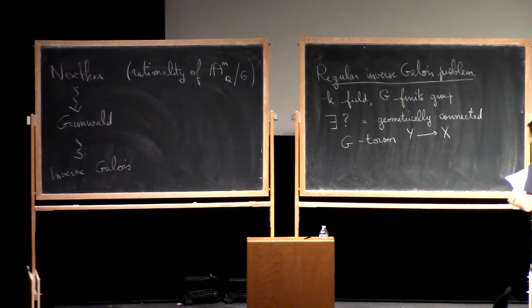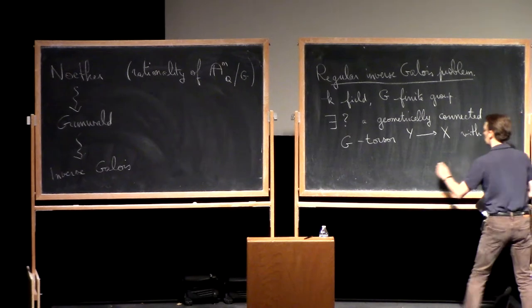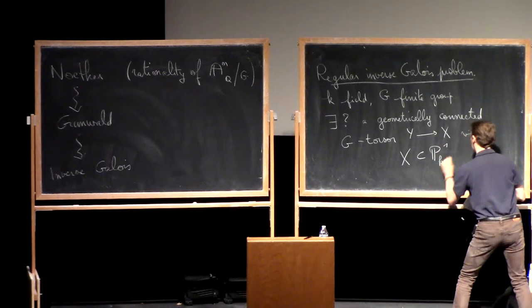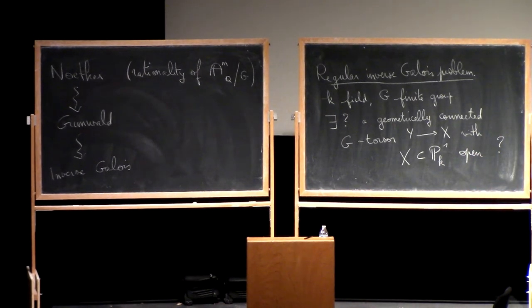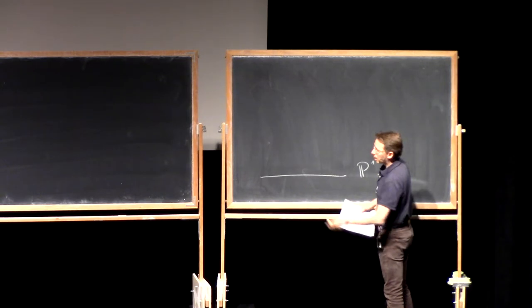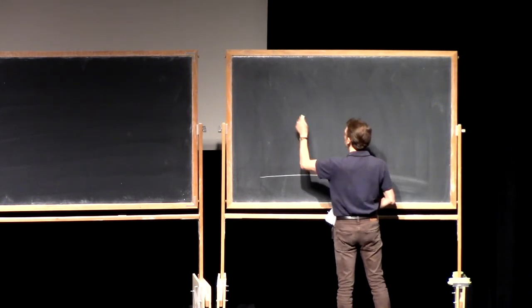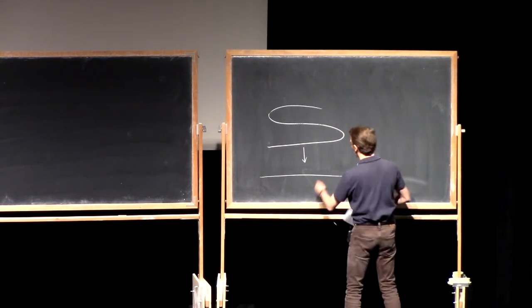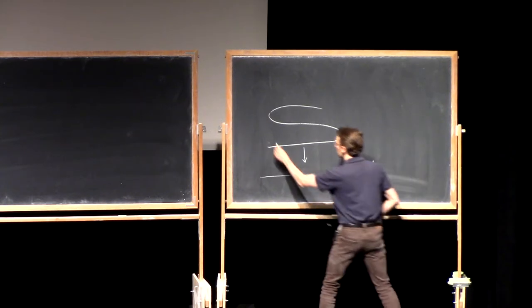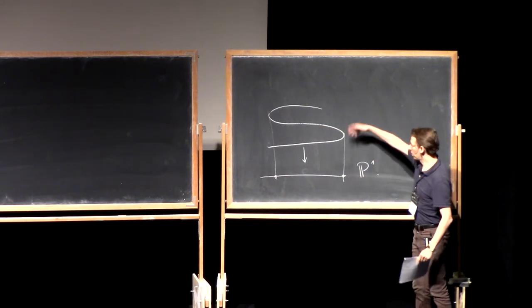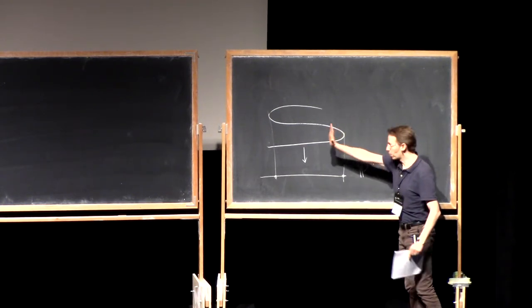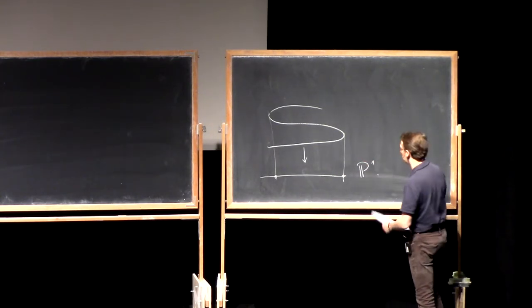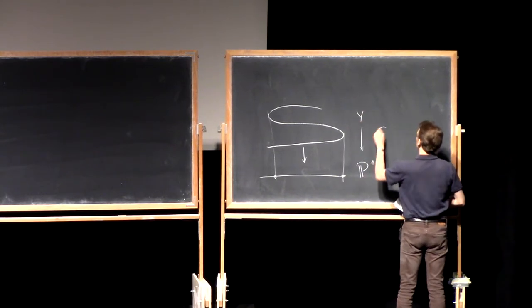The question is: does there exist a geometrically connected G-torsor Y → X, where X is an open subset of P¹? To make things clearer, this is P¹, and X is P¹ with a few points removed. Y is going to be a curve mapping to X. The G-torsor is over the points where there's no ramification, and there is an action of G on the curve upstairs which acts fiber-wise, simply transitively on the fibers.